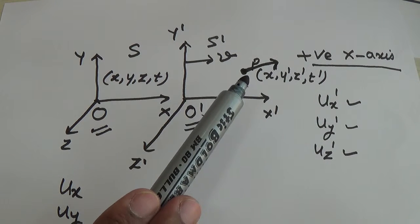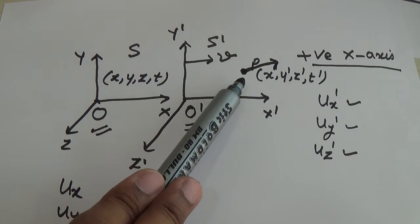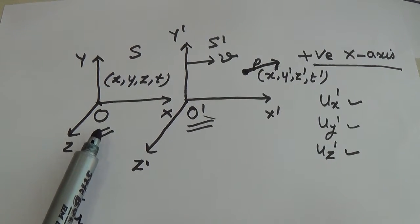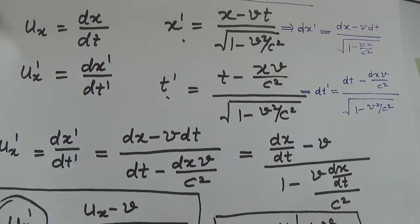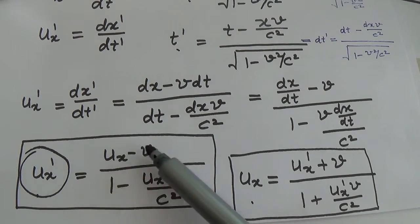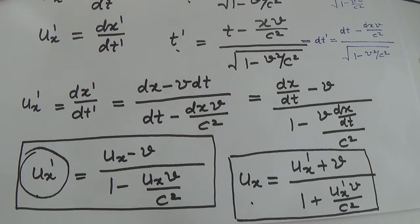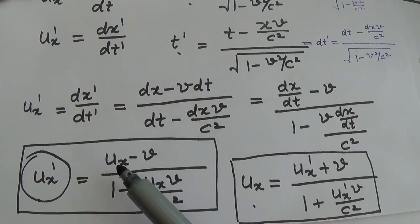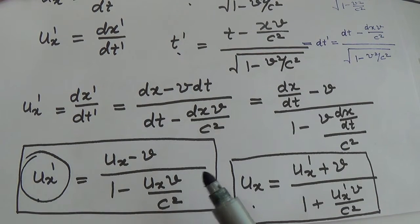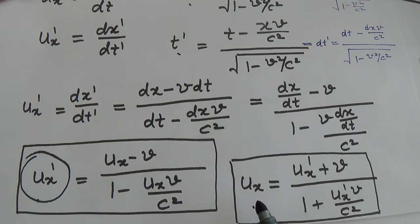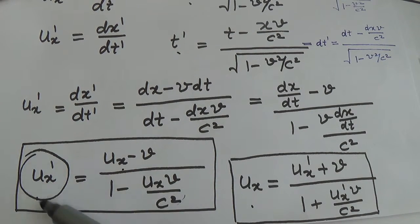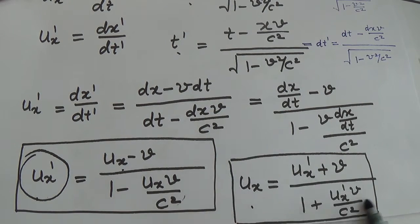ux will be the speed — or in terms of the component along the x axis — according to the observer O. But if you know only the formula ux prime equals ux minus v upon 1 minus ux·v upon c squared, and in the numerical problem you have to find out ux, don't try to rearrange the terms in this formula. If you have to find out ux according to the observer O, you have to use the other particular formula derived from the inverse Lorentz transformation.